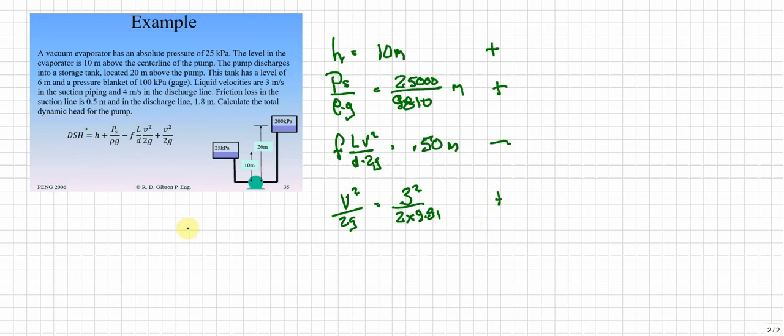And so what we wind up with is something that looks like 10 meters plus 25,000 over 9810 minus 0.50 plus 3² over 2 times 9.81.